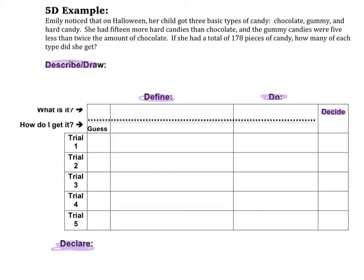The first thing I'm going to do is go through again and describe. Because I have this on my iPad, for my describe part, I'm just going to highlight the important pieces of information. If you're doing a problem out of the book and writing your answers on notebook paper, then write down what the basic pieces of information are. She's got chocolate, gummy, and hard candy — three things. She had 15 more hard candies than chocolate; the gummy candies were five less than twice the amount of chocolate; and she had a total of 178 pieces of candy. Those three things are the important things in the problem to help me get an answer.